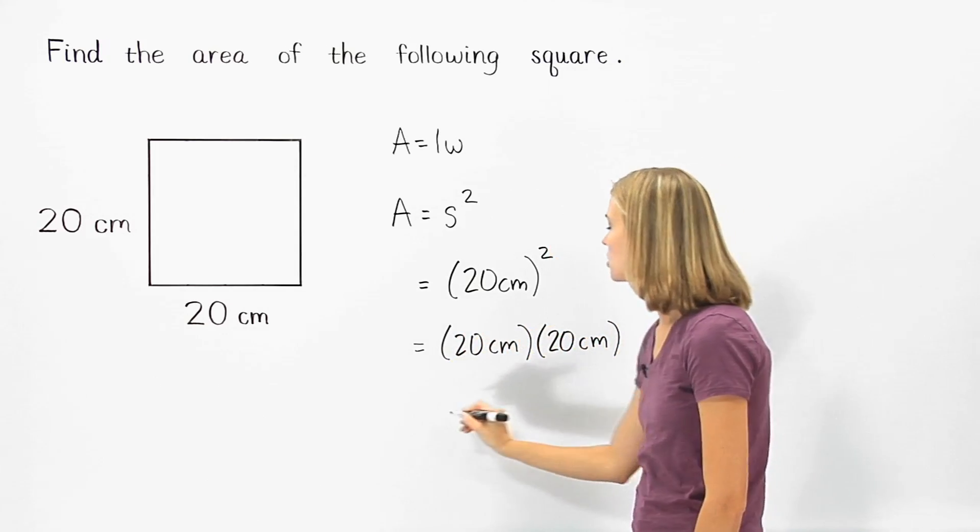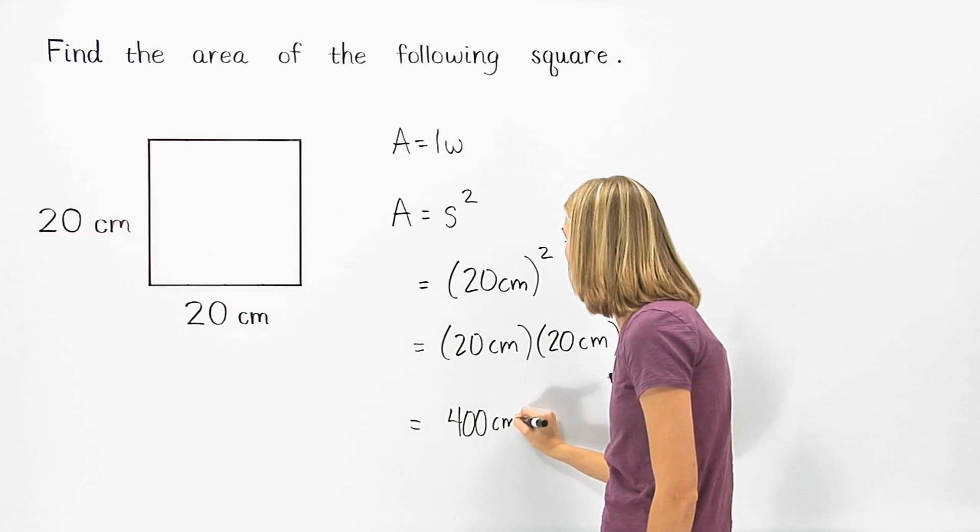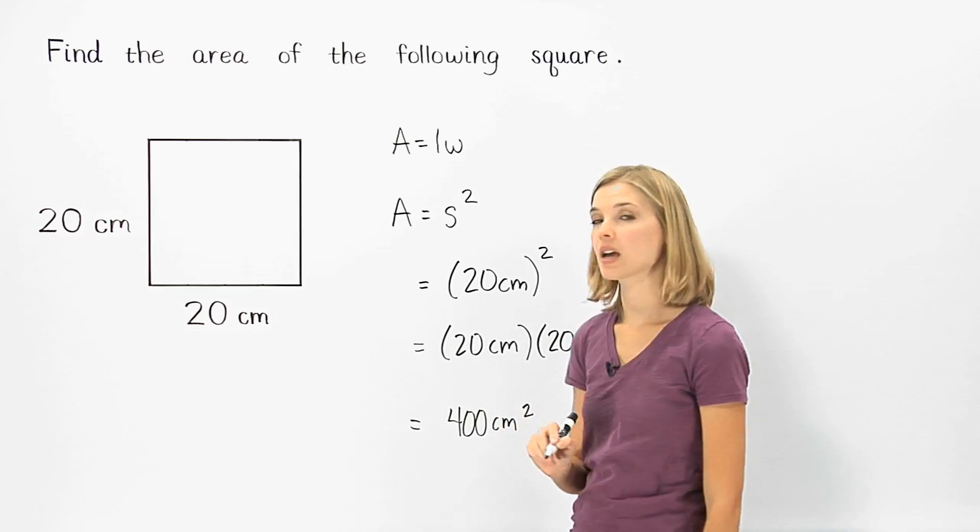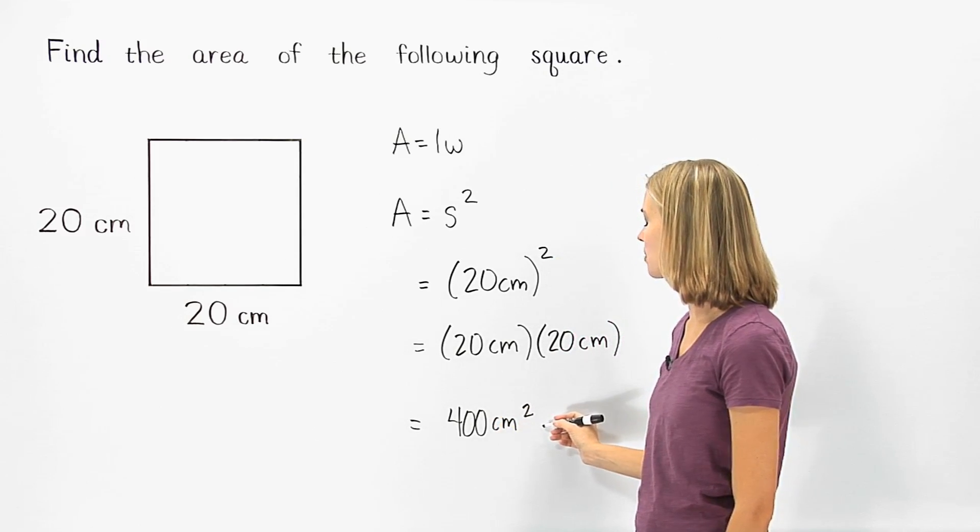This equals four hundred centimeters squared. So the area of the given square is four hundred square centimeters.